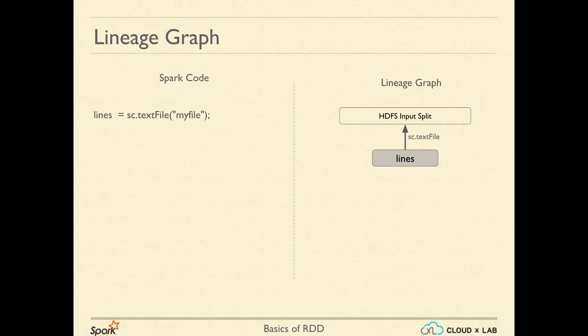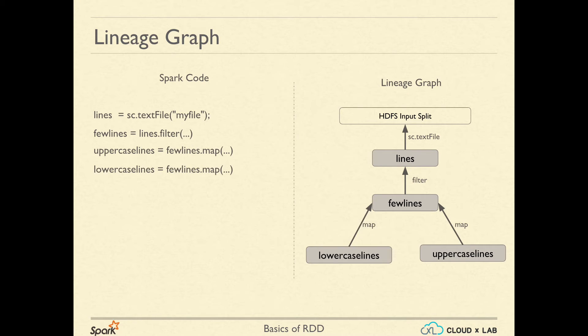The node in the graph represents the RDD while the edges represent the transformations. The filter transformation creates another node, and so does map. And when we call uppercase lines.count, which is an action,